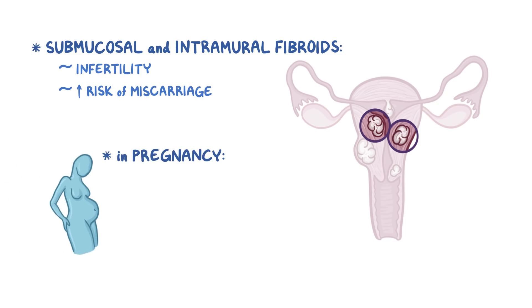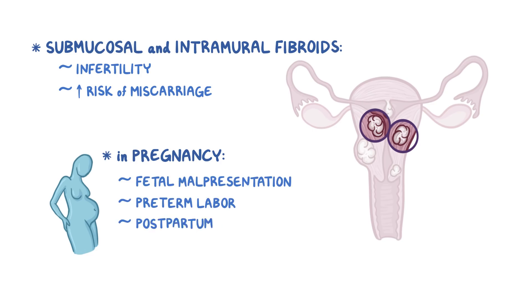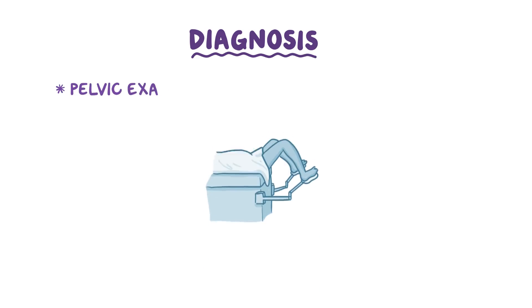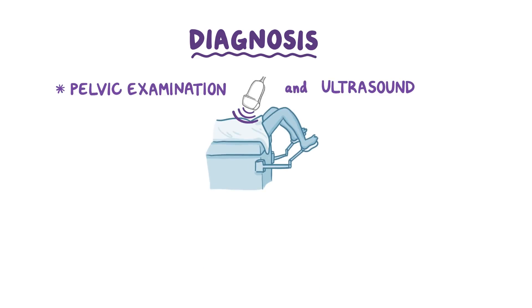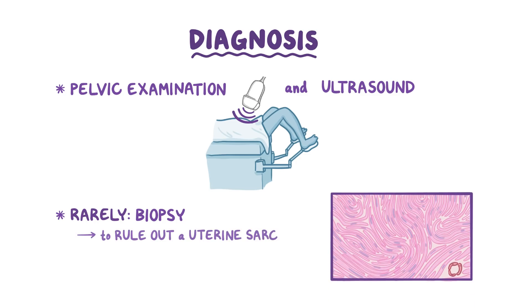In pregnancy, fibroids can also cause issues such as fetal malpresentation, preterm labor, and postpartum hemorrhage. Diagnosis of uterine fibroids is done with a pelvic exam and ultrasound. Rarely, a biopsy of the mass is done to rule out that it's not a cancerous tumor, called a uterine sarcoma.